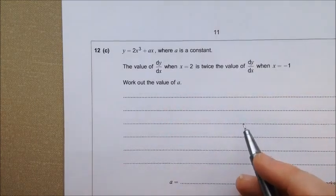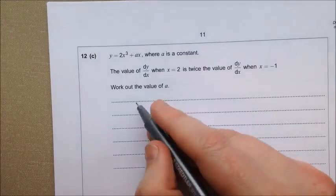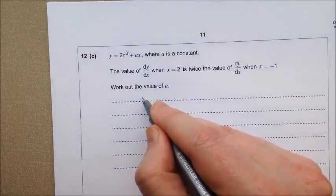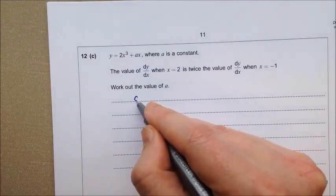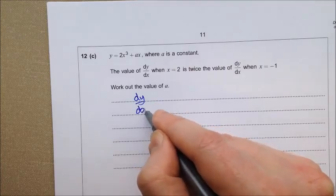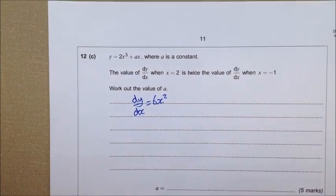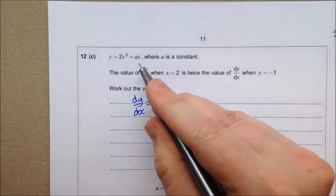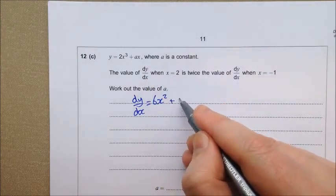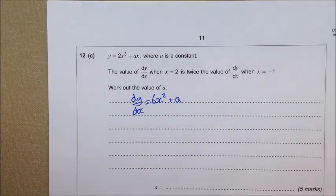OK, the value of dy dx. Well, we're not giving dy dx, but we can try and work it out. So dy dx is 6x squared plus a. Now, the x is going to disappear, so all that we're going to be left with is the a.